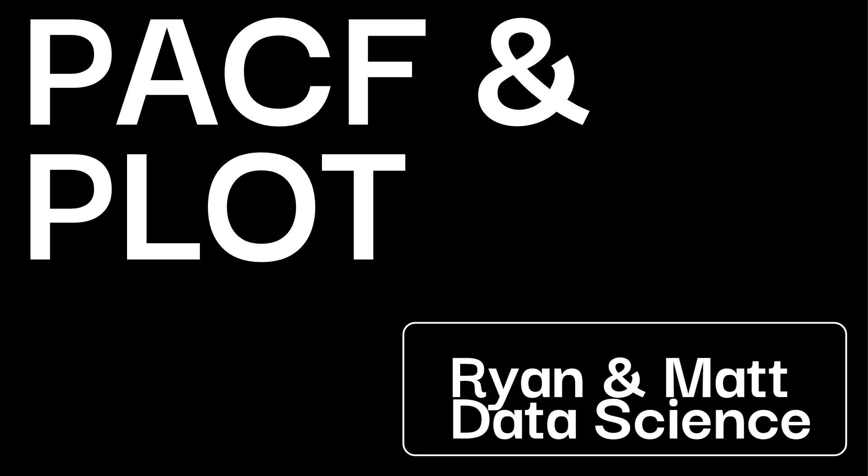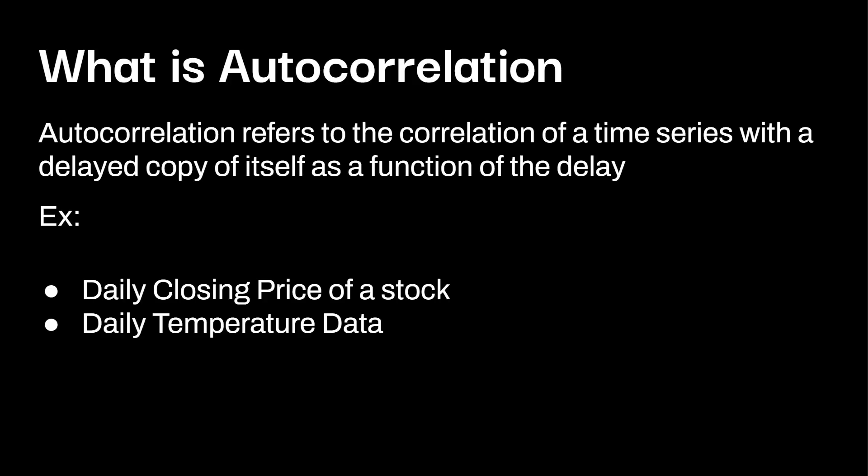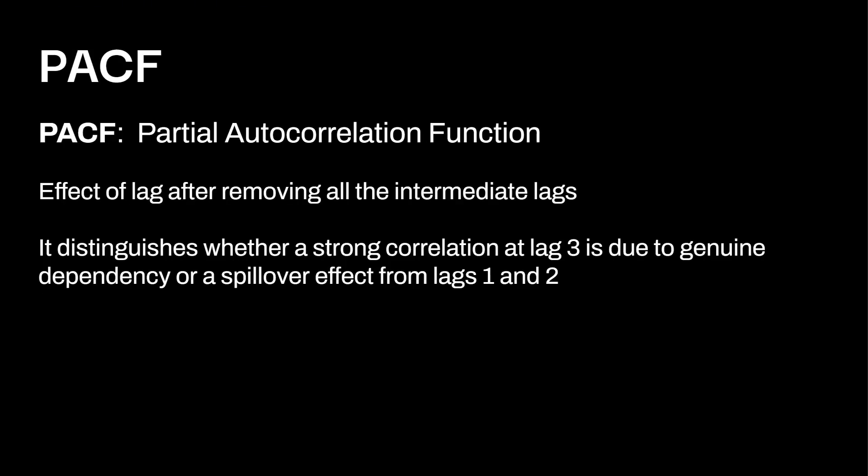Let's take a look at PACF and how we can plot it. First, what we need to know is what is an autocorrelation? Autocorrelation refers to the correlation of a time series with a delayed copy of itself as a function of the delay. You can think of this as like daily closing prices of a stock or daily temperature data. So what exactly is the PACF? This is the partial autocorrelation function, the effect of the lag after removing all of the intermediate lags, distinguishes whether a strong correlation at lag three is due to genuine dependency or a spillover effect from lags one and two.